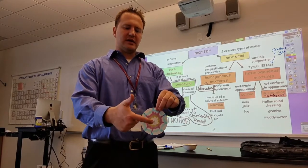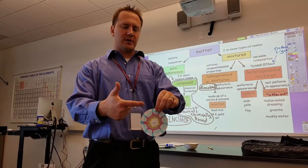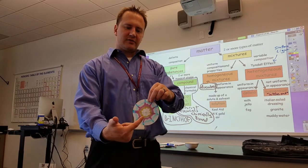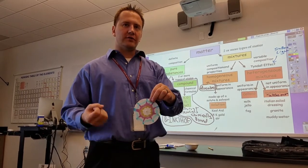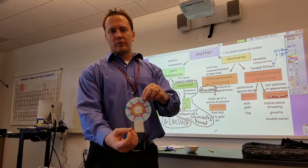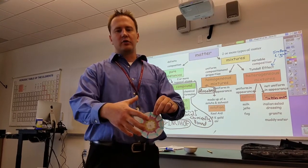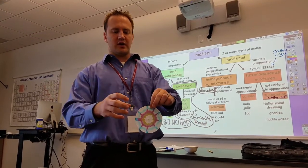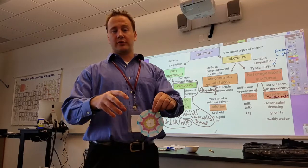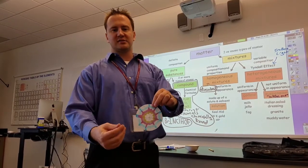The blue ink was more attracted to the eluent phase and passed further across the paper. The yellow dyes had a stronger affinity for the solid phase, or the paper, and therefore were left behind. The more attracted it is to the solvent that's passing, the further it's going to move. The more attracted it is to the stationary phase, the more it's going to get left behind.